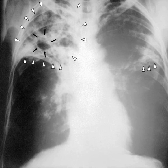Mycobacteria have an outer membrane lipid bilayer. If a gram stain is performed, MTB either stains very weakly gram positive, or does not retain dye as a result of the high lipid and mycolic acid content of its cell wall. MTB can withstand weak disinfectants and survive in a dry state for weeks. In nature, the bacterium can grow only within the cells of a host organism, but M. tuberculosis can be cultured in the laboratory using histological stains on expectorated samples from phlegm, also called sputum. Scientists can identify MTB under a microscope.